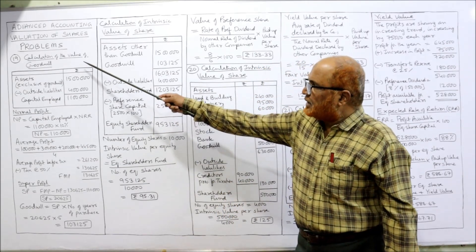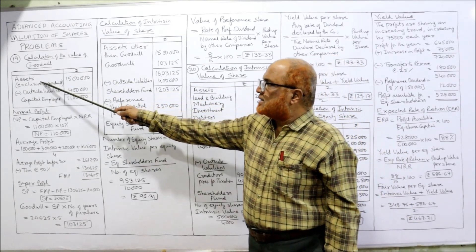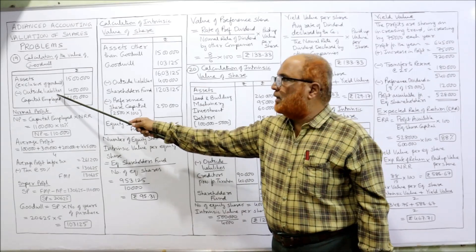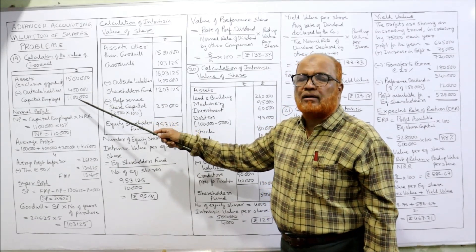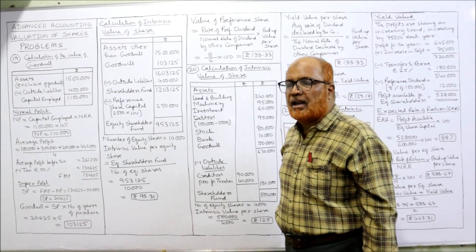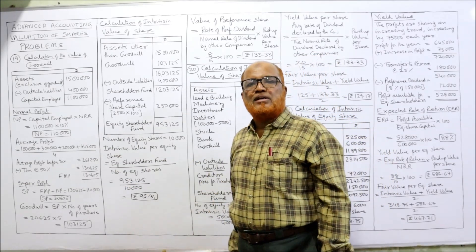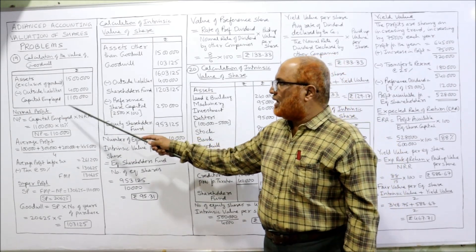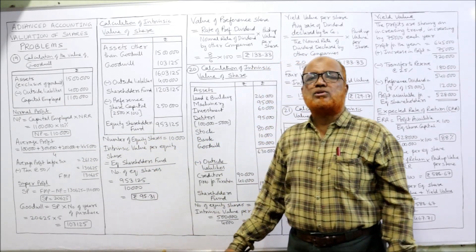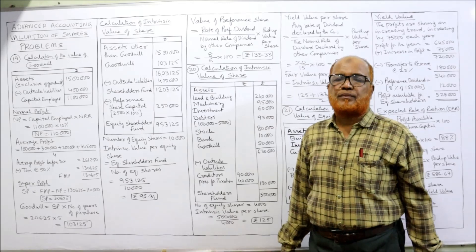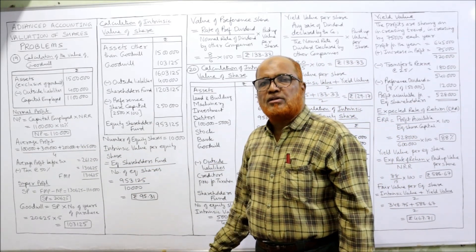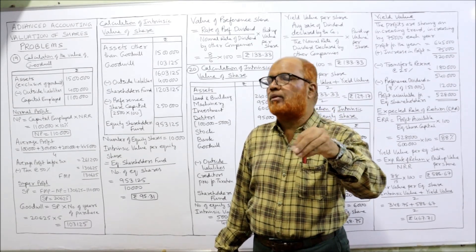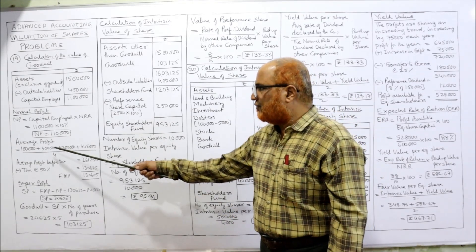For the calculation of goodwill: assets are ₹15 lakh exclusive of goodwill, outside liabilities ₹4 lakh, so capital employed is ₹11 lakh. Normal profit = capital employed × normal rate of return = ₹11 lakh × 10% = ₹1 lakh 10,000. For average profit, we exclude the abnormal ₹5,000 and take the average of the remaining four years.